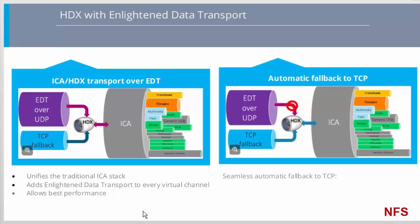EDT also maintains a seamless fallback to TCP when conditions require, without any administrative action. The user won't notice any transition other than a difference in interactivity. This automatic fallback to TCP would occur if the HDX client-server connection is over a network where UDP traffic has been blocked, or the user is running an incompatible receiver version.